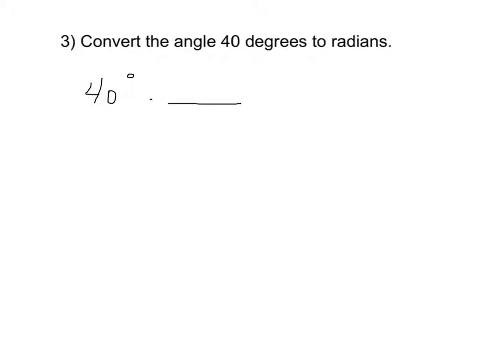In this case, because degrees are on the top, we're going to want to put degrees on the bottom of the fraction, and I'd like to change that to radians, so I'll put that on the top. What's going to happen is my degrees are going to cancel, and I'll be left with radians.